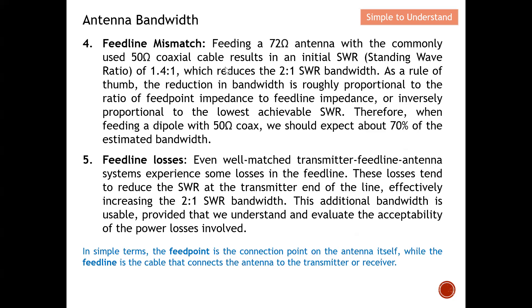Feed line mismatch: for example, if we need to feed a 72-ohm antenna — with a characteristic impedance of 72 ohm — using the commonly used 50-ohm coaxial cable, the initial SWR standing wave ratio is 1.4 to 1. If we quantify 2-to-1 as the SWR bandwidth, we actually have a mismatch between the antenna and the coaxial cable, which will further reduce the bandwidth.